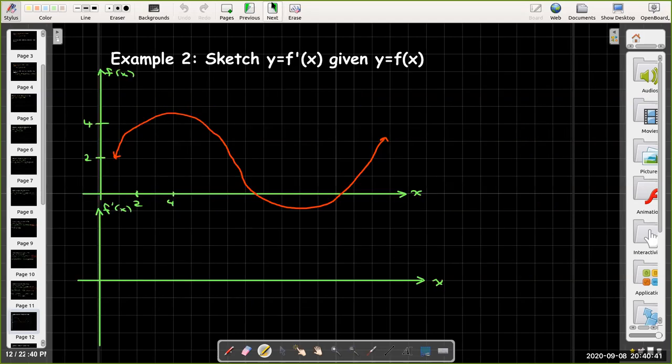Let's look at another example. And in this example, we're given the graph of f of x. And what we're asked to do is to use that graph to sketch the graph of the derivative. Now we're only getting an estimate here. We don't know what the formula is for f.